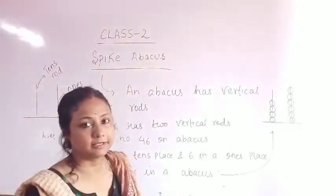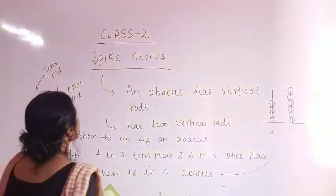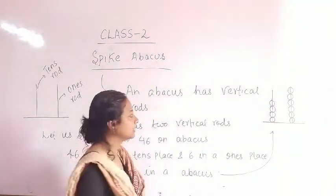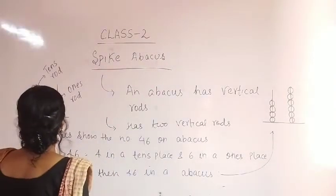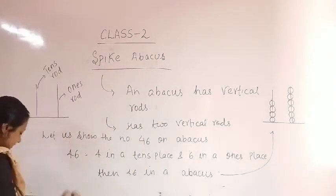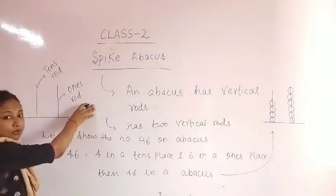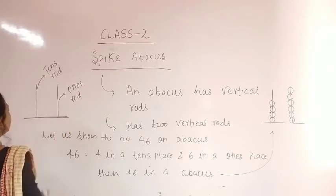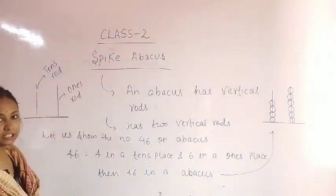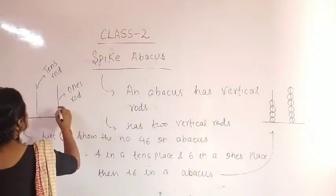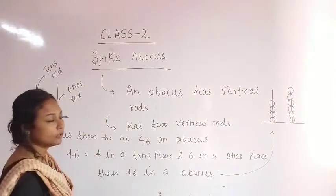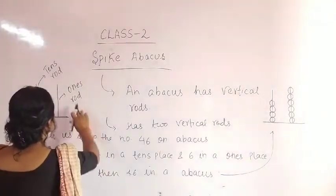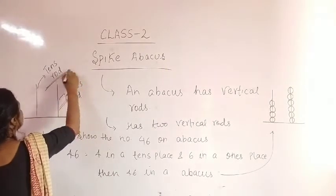This chapter is related to the Spike Abacus. What is a Spike Abacus? The abacus has 2 rods on a flat, horizontal surface — 2 rods in a vertical arrangement. One rod is in the 1's place and the 2nd rod is in the 10's place.